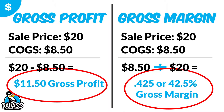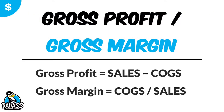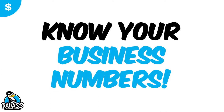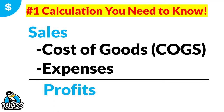So once again, your gross profit and your gross margin are this simple. Gross profit is sales minus your cost of goods. Your gross margin is cost of goods divided by your sales. The first one is done as a dollar amount and the second one is done as a percentage. It's really important that you know your business numbers, because each of those percentages and dollar amounts mean something different in your business. Sales minus cost of goods minus expenses equals profits — so many things are easy to remember if you just remember the basic flow of money through your business.